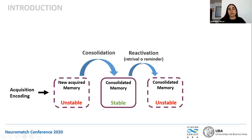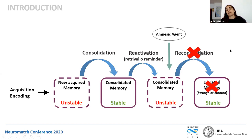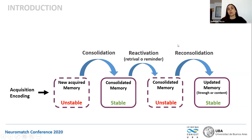By a presentation of a reminder, this memory can be reactivated and go back to an unstable or labile stage. And after a period of time, this memory can restabilize through a process called reconsolidation, which allows the memory to update in strength or content. Amnesic agents can act over the unstable memory and interfere with this process. In the laboratory, threat conditioning has been taken as the paradigm to assess fear memory and anxiety disorder related memories.